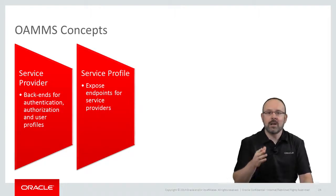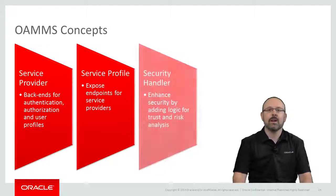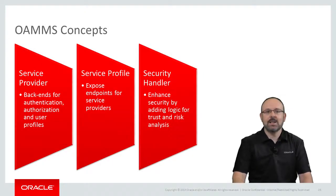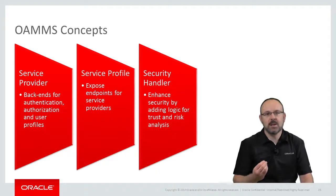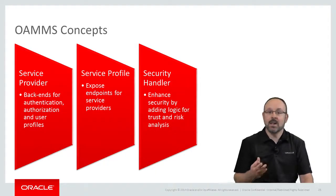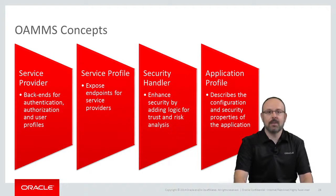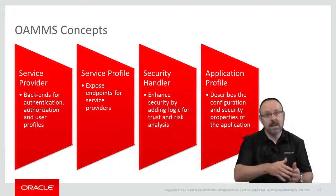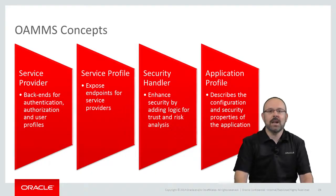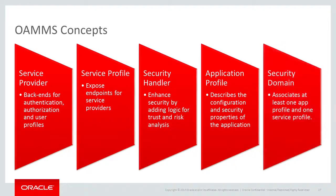Service profiles are logical endpoints for service providers. Third are security handlers. They enhance security processes by adding business logic for trust and risk analyzers to them. Their use is optional. The fourth concept is application profiles — they describe the configuration and security properties of a specific application. Profiles are cross-platform; they support applications that run both on iOS and Android. And finally, we have security domains. Domains associate at least one app profile and one service profile. Let's now have a look at how to create a mobile and social connection in MAF.